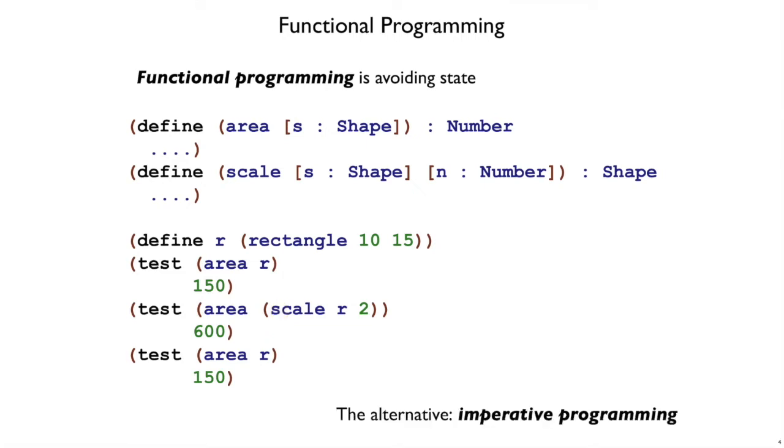The scale function doesn't change the rectangle. In this sense of functional programming, the alternative would be imperative programming. That is, a scale function that changes the shape that we give it so that the old shape is not available anymore.